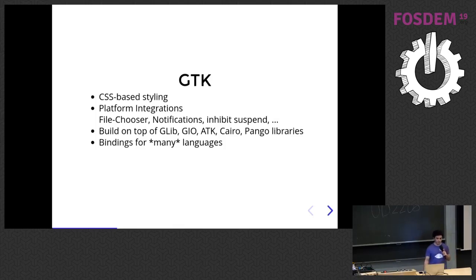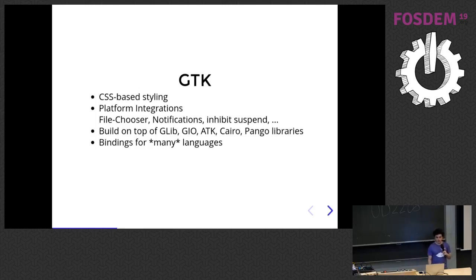GTK provides a couple of platform integration APIs. It's built on top of Glib, GIO — which is the library for handling input and output in Glib — ATK, which is an accessibility library, Cairo, and Pango. It has bindings for many, many languages. There is a framework to automatically generate bindings for Glib-based projects using just an XML file.